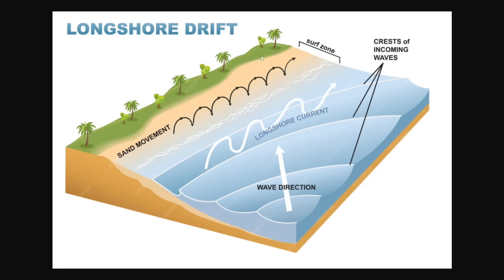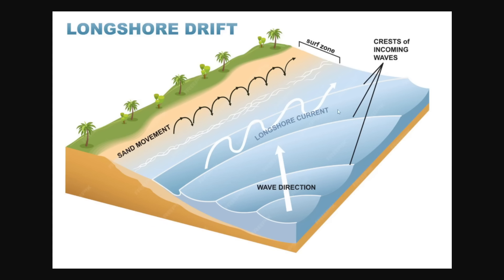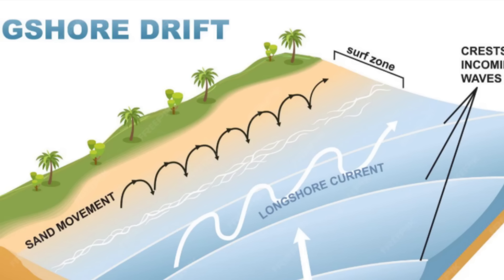The process of longshore drift is created based on the angle of waves hitting the shore. As you can see in this diagram, the waves are hitting the shore at an angle, moving sand up at the angle of the waves — which is known as swash — and then moving the sand back down as the waves are receding, which is known as backwash. This process of longshore drift creates a slow zigzag movement of sand.